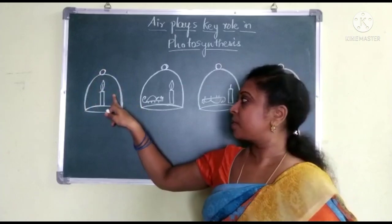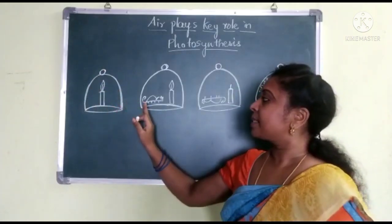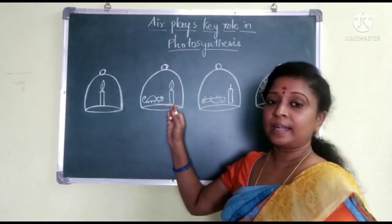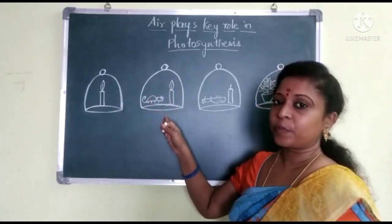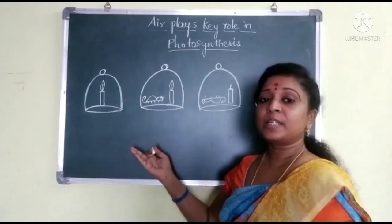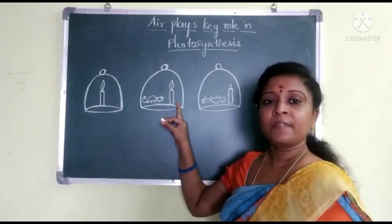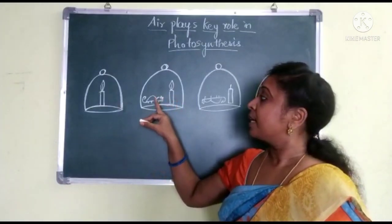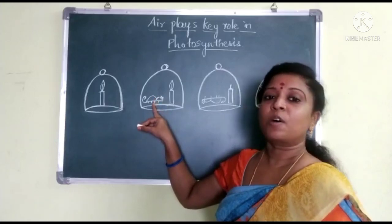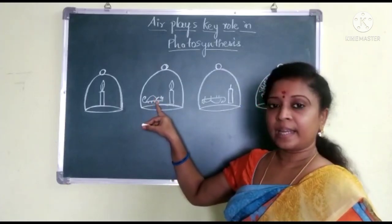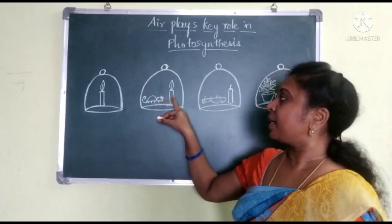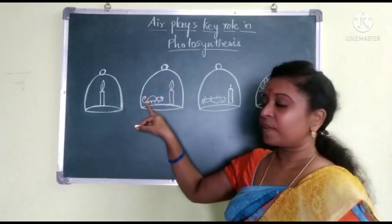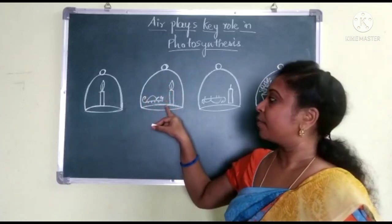Next, he inserted a mouse and a lit candle under the bell jar. After a few seconds, the burning candle stops and the mouse dies. Why? Because the mouse needs oxygen to live and breathe, and the burning candle also needs air for burning. With no air inside the bell jar, both the burning stops and the mouse dies.